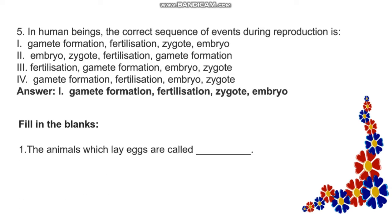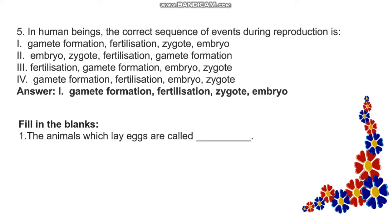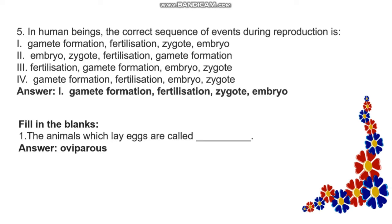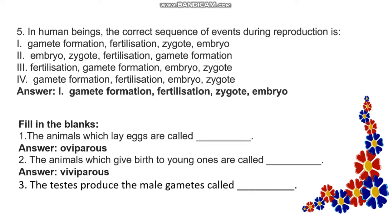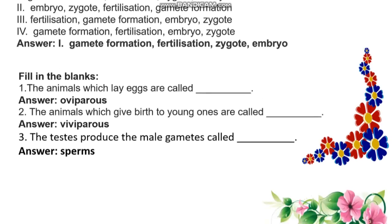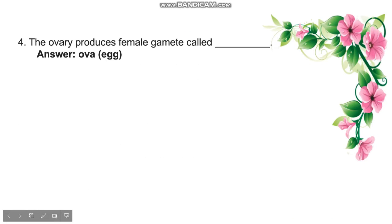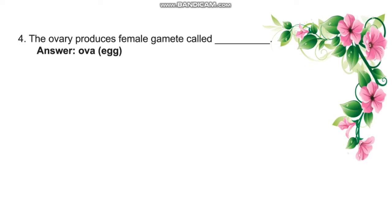Fill in the blanks. The animals which lay eggs are called Oviparous. The animals which give birth to young ones are called Viviparous. The testes produce the male gametes called Sperms. The ovary produces female gametes called Ova or Egg.